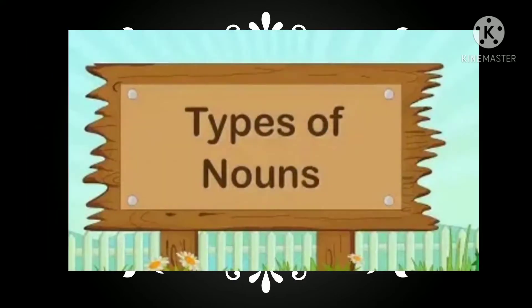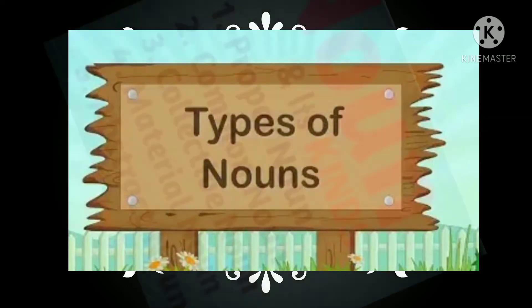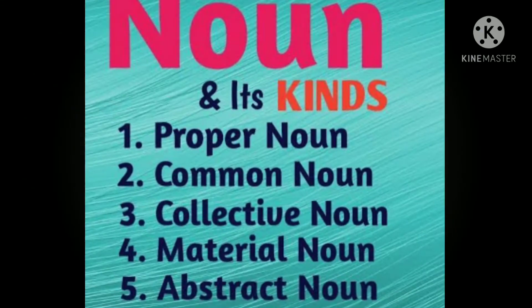So now let us do its kinds. Here are the kinds of nouns: first is proper noun, second is common noun, next is collective noun, then material noun, and last is abstract noun. Let us read about these nouns in detail.